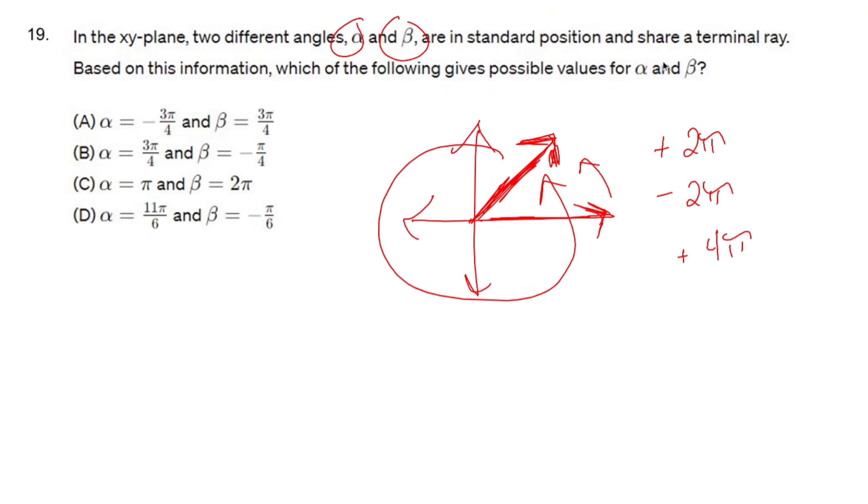Based on this information, which of the following gives possible values for α and β? So they're going to give you two radians and you have to figure out, are these the same ones?